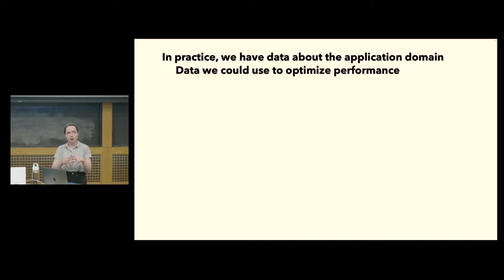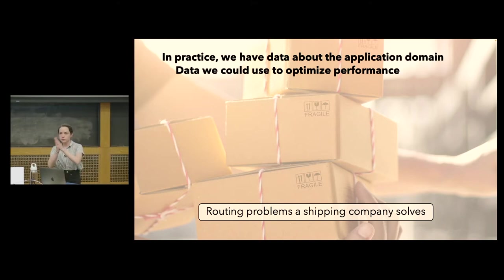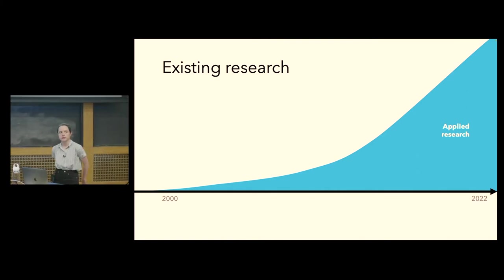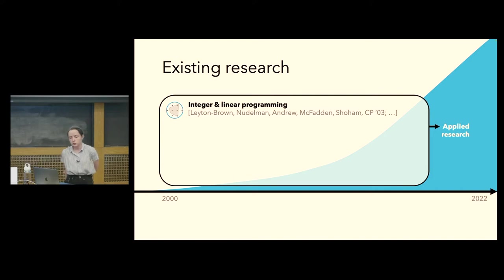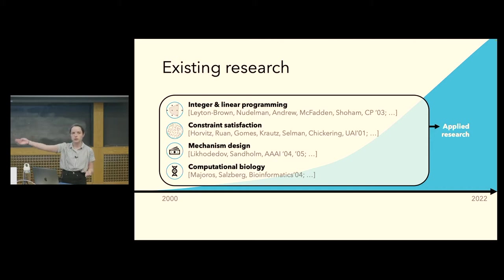A shipping company will have access to all of the routing problems it had to solve over the course of a year or more, and the question is how can it use this data to configure its solver. Over the past two decades, there's been quite a lot of research on using machine learning in the context of discrete optimization, especially from an applied perspective — research by Kevin Leighton-Brown and others on integer and linear programming, constraint satisfaction, mechanism design, and computational biology.